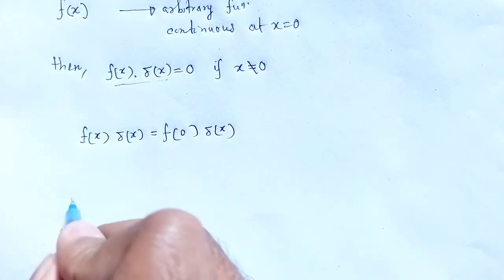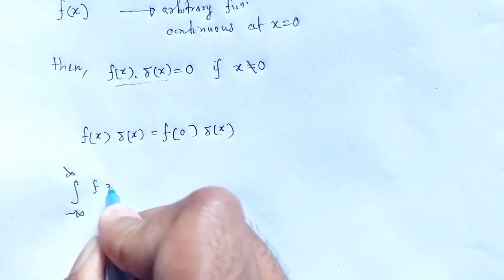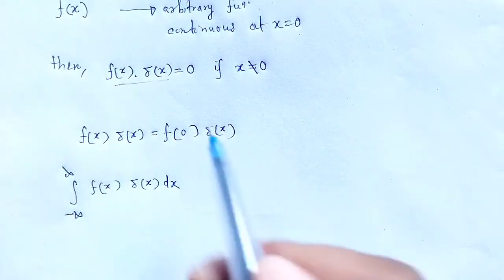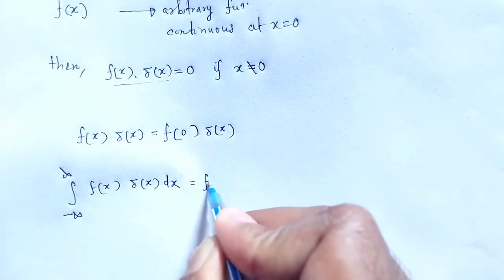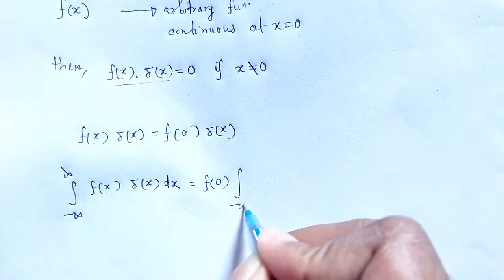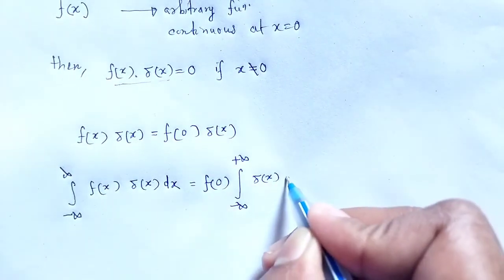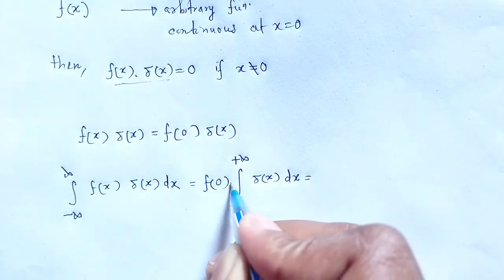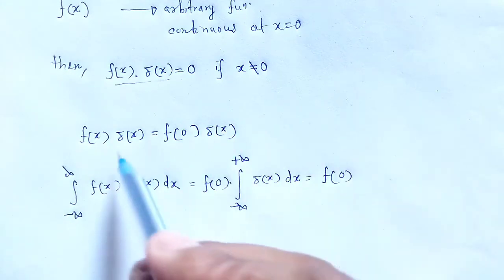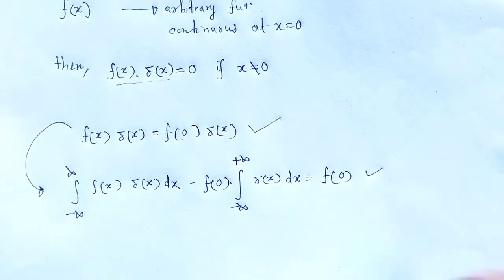As a result, the integration from minus infinity to plus infinity of f(x)·δ(x) dx, when we integrate, f(0) is a constant, so the integration from minus infinity to plus infinity of δ(x) dx gives the value f(0). So the result is f(0).